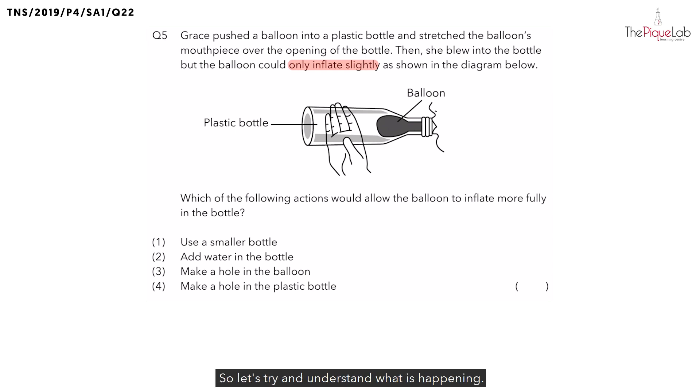So let's try and understand what is happening. Isn't the plastic bottle empty? Why is it that the balloon cannot inflate fully? This means that even though the bottle appears empty, there must be something blocking or stopping the balloon from inflating fully. Now, what do you think is present inside this plastic bottle?